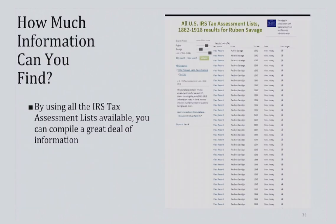However, given that same information once a month for four years — and more if you're able to go to the regional facility — you can really gain a lot of insight into how someone was living. Here is a screenshot of all of the results for Ruben Savage in the tax assessment list from Ancestry.